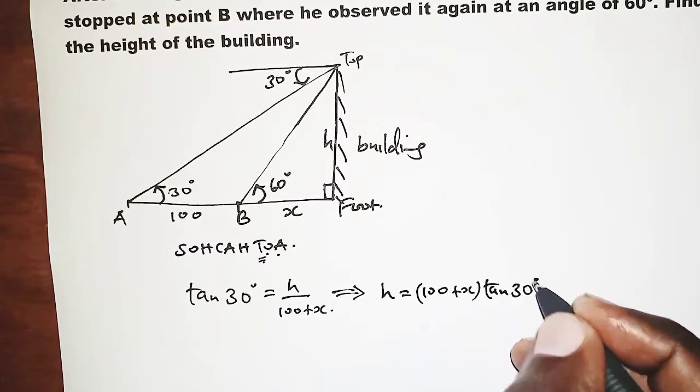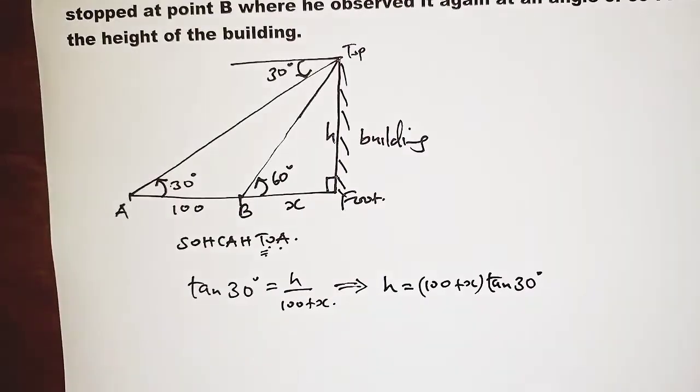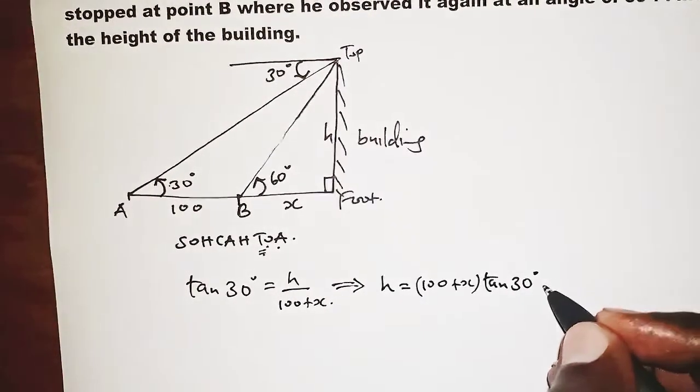So this implies that, making H the subject, H will be (100 + X) times tan 30°. So this should give us a first equation.